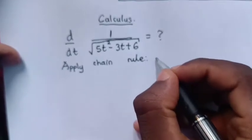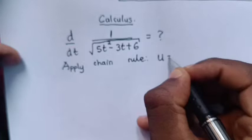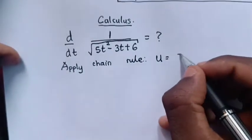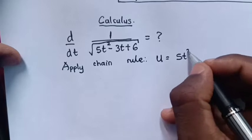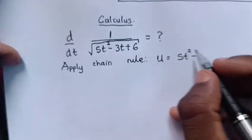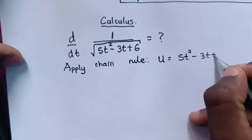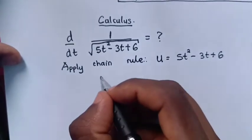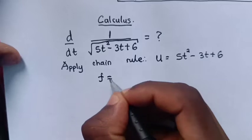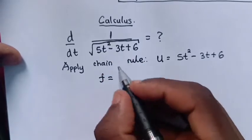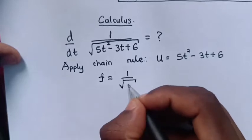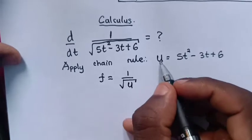Now, we let u equal to this inside the square root: 5t² - 3t + 6. Therefore, f will be equal to 1 over square root of u, because we let u into this part inside the square root.